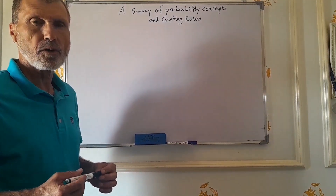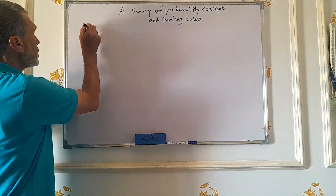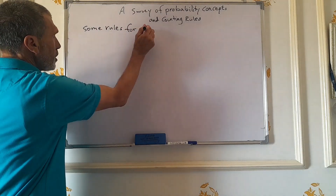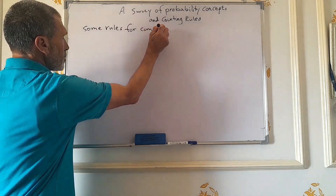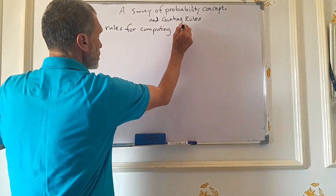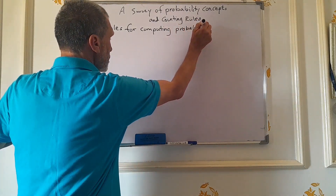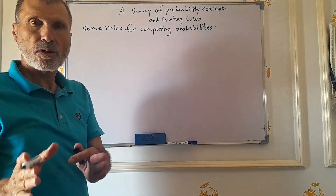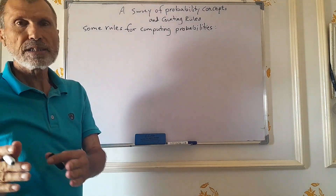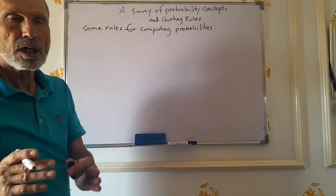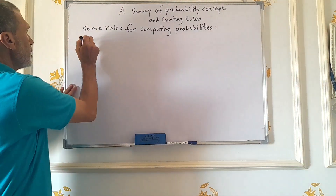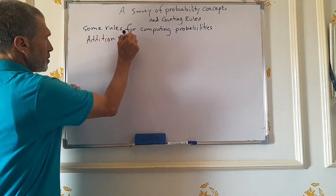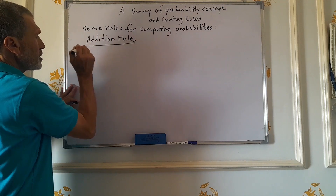Now we talk about some rules for computing probabilities. We have special rules, additional rules, and multiplication rules. Let's now focus on the addition rules. We have two types of addition rules.